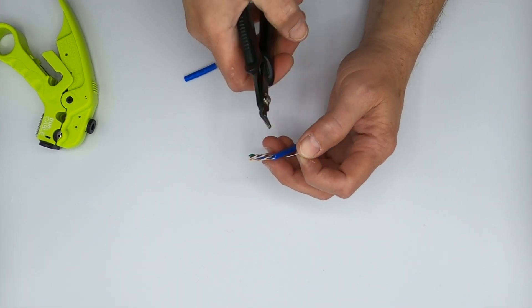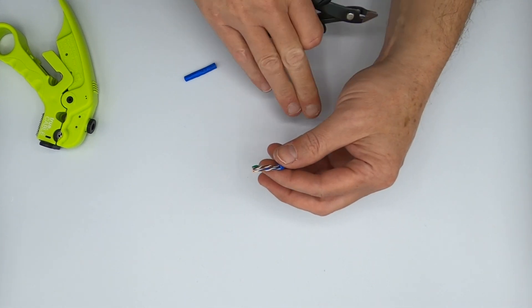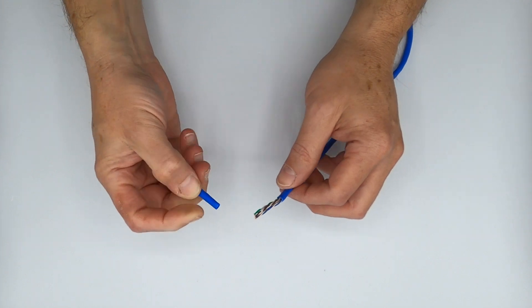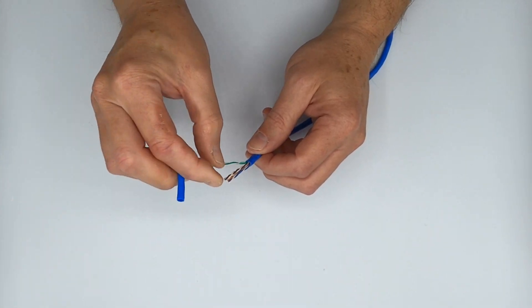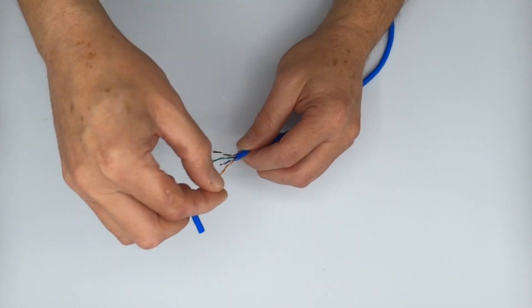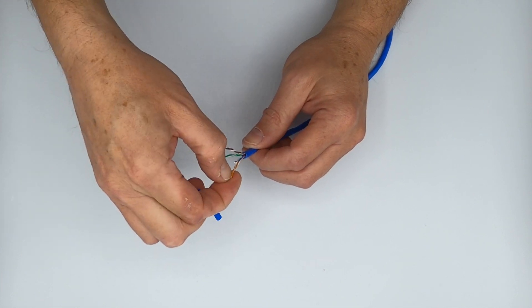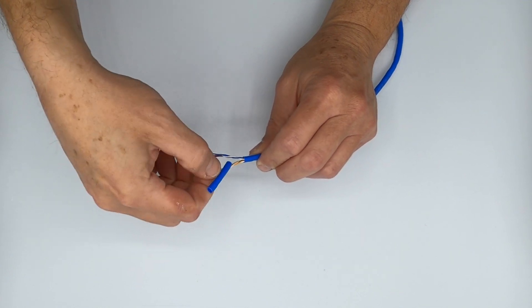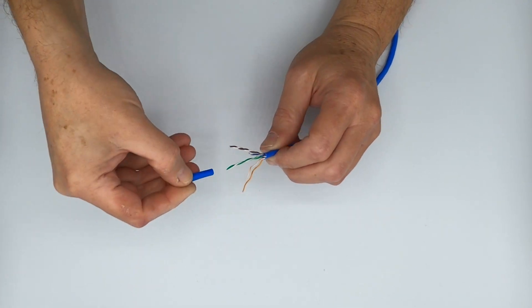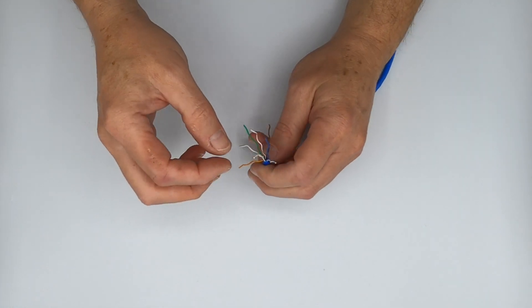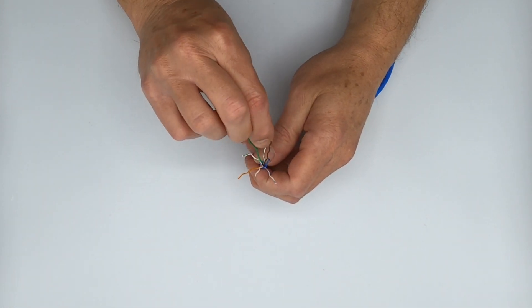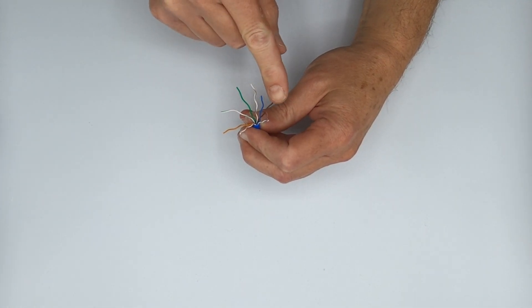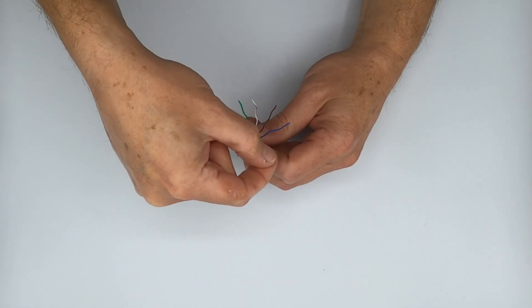Next up is to flush cut off the ripcord. Then keeping that little piece of cable jacket you took off, you want to use this piece of cable jacket to actually untwist your conductors for you.